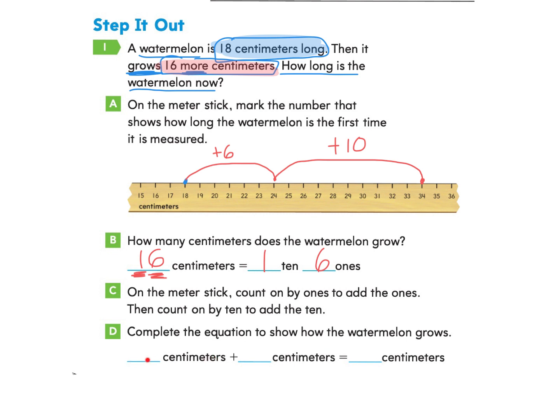So first we had 18, 18 centimeters. So we'll write that in 18 centimeters. And then the watermelon grew by 16 centimeters, which we were told in our word problem. So when we put 18 and 16 together, we find that the answer is 34. So 18 centimeters plus 16 centimeters is 34 centimeters. Great work.